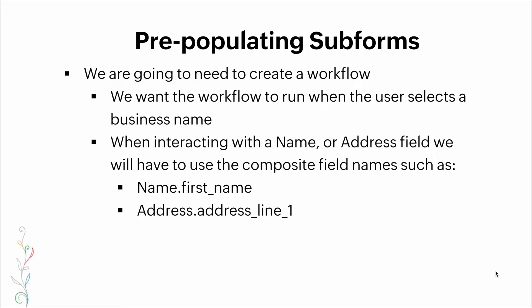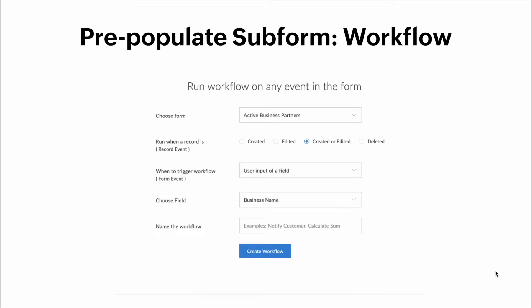We want this workflow to run when the user selects the business name. When interacting with a name or address field we will have to use a composite field name — such as `name.first_name` or `address.address_line_1`.